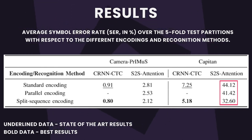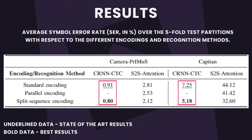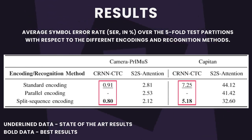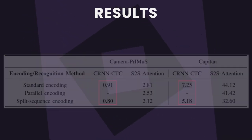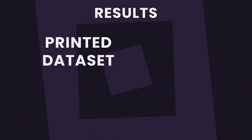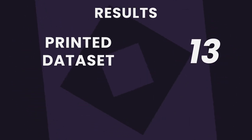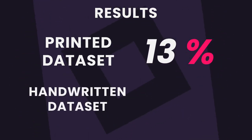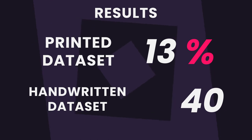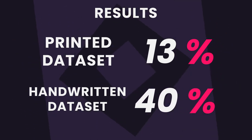This problem may also be related to the lack of enough handwritten data to train this model with acceptable performance. Despite that, we found interesting results in the convolutional recurrent neural network trained with CTC when comparing the standard and the split-sequence encodings. Surprisingly, the latter provides the best results in all cases. In the case of the printed dataset, this improvement is negligible; however, in the case of the handwritten dataset, there is a decrease of nearly 40% in error with respect to the baseline.